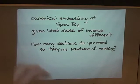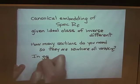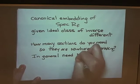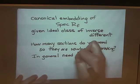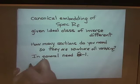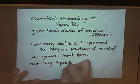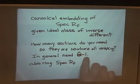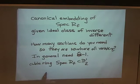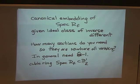The question is how many sections do you need so they are nowhere all vanishing? It turns out that in general you need n minus one sections. So if I have a cubic ring (n equals 3), I need two sections and I get a map to P1. That's the main reason every cubic ring arises from a binary cubic form on P1 — that's the magic.